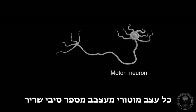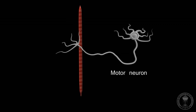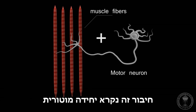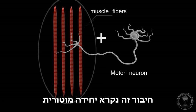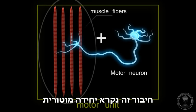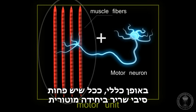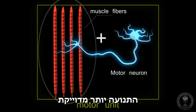Each motor neuron innervates several muscle fibers. This association defines what is called a motor unit. In general, the fewer the muscle fibers are in a motor unit, the more the movement is precise.